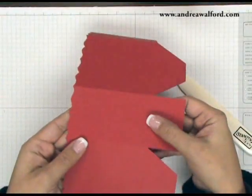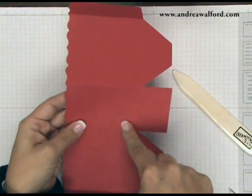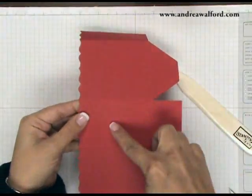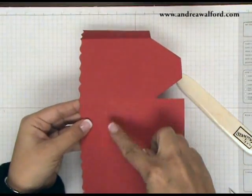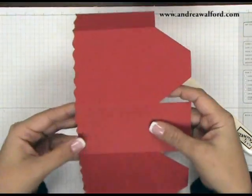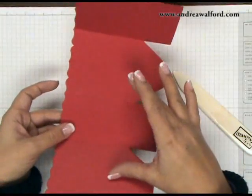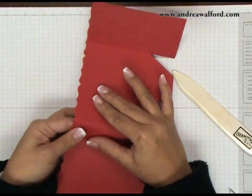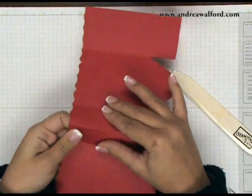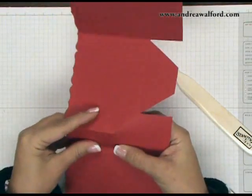And then here on the side, you can see there's a V-shaped score. Now you want this score line to go into the opposite direction of the side score lines. So I'm just going to flip this like this so that I'm looking at the inside of the box. And I'm going to very carefully press up along this score line like this.